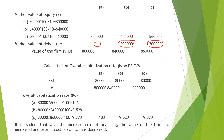The overall cost of capital Ko equals EBIT divided by value of the firm. EBIT is 80,000 in all three cases. In the first case: 80,000 / 8,00,000 × 100 = 10%. In the second case: 80,000 / 8,40,000 × 100 ≈ 9.52%. In the third case: 80,000 / 8,60,000 × 100 ≈ 9.30%.